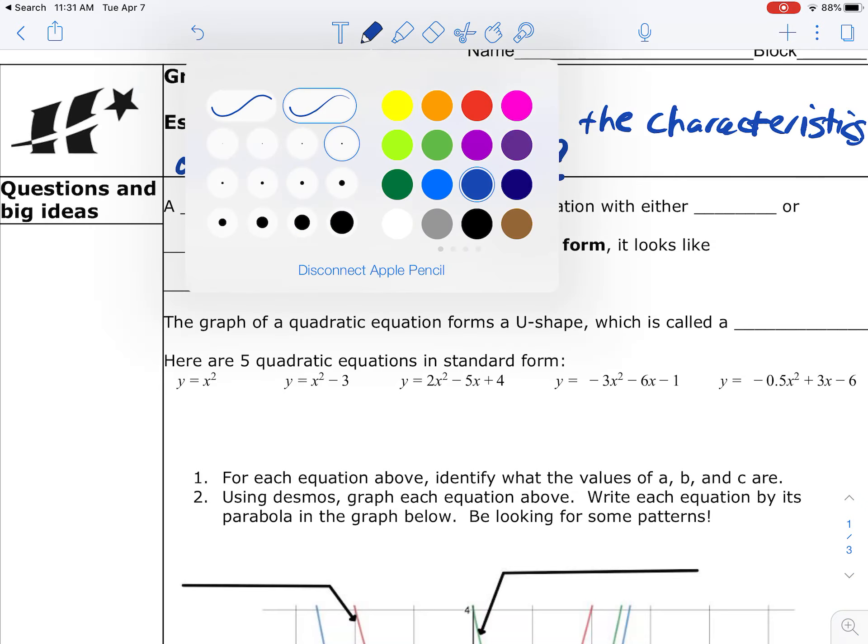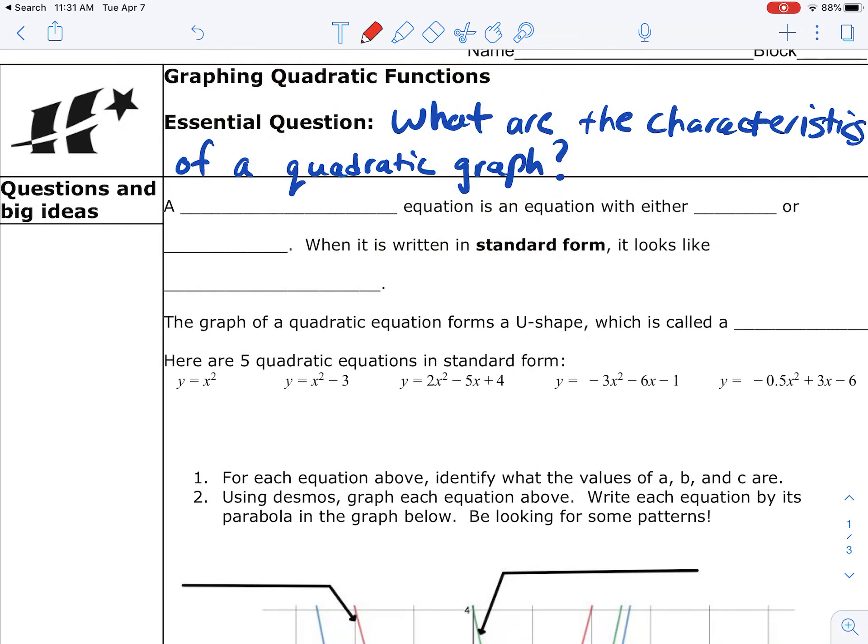Let's talk a little bit about what a quadratic equation will look like. A quadratic equation is an equation with either y equals x squared, or somewhere in it it's going to have an x times another x. Those x's might be in parentheses, kind of like a factored form, or they might just be stated.